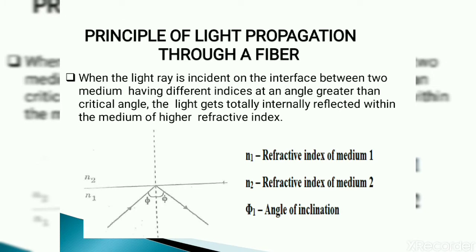The principle of light propagation through the fiber: when the light ray is incident on the interface between two media having different refractive indices at an angle greater than the critical angle, the light gets totally internally reflected within the medium of higher refractive index. When refractive index n1 is greater than n2, and the angle of incidence exceeds the critical angle (greater than 90 degrees), the ray of light reflects back into the medium with the higher refractive index.